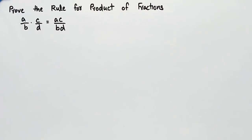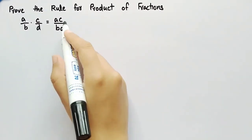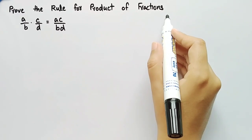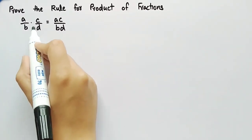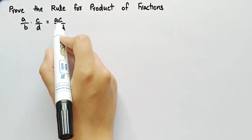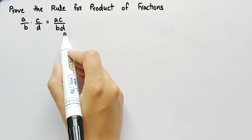In this video, we will prove the rule for product of fractions — that is, a by b dot c by d is equal to ac product divided by bd product.